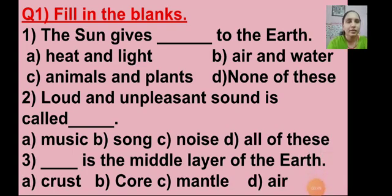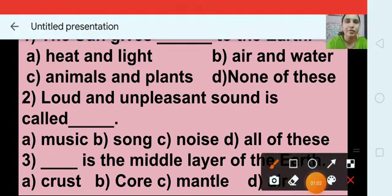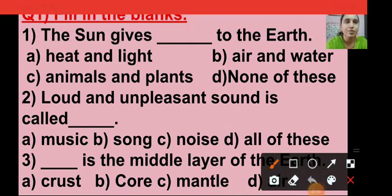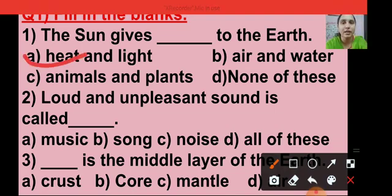Question number 1, filling the blanks. Here 4 options are there for each question and you have to choose the right answer. Question number 1: the sun gives dash to the earth, and the options are heat and light, air and water, animals and plants, and option D is none of these. The right answer is heat and light. Sun gives us heat and light, so I am putting a tick on option A.